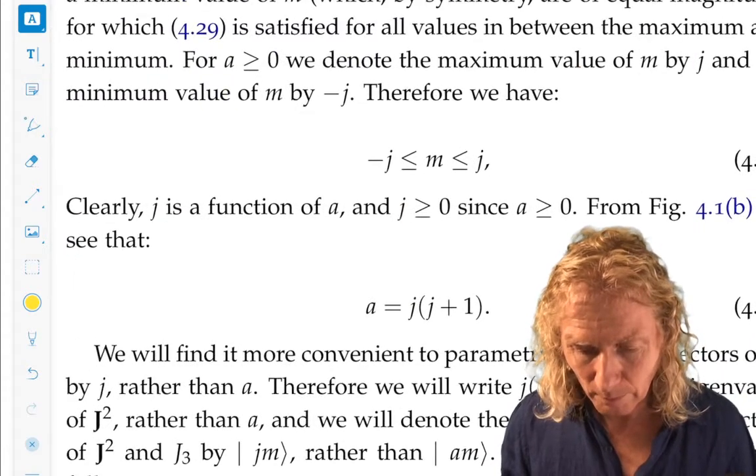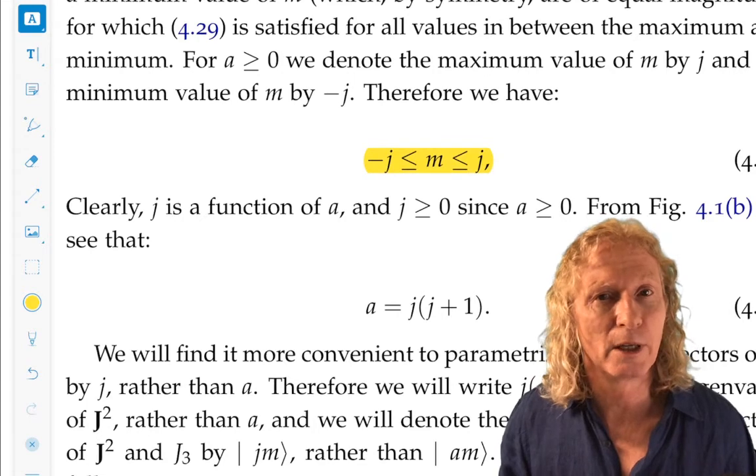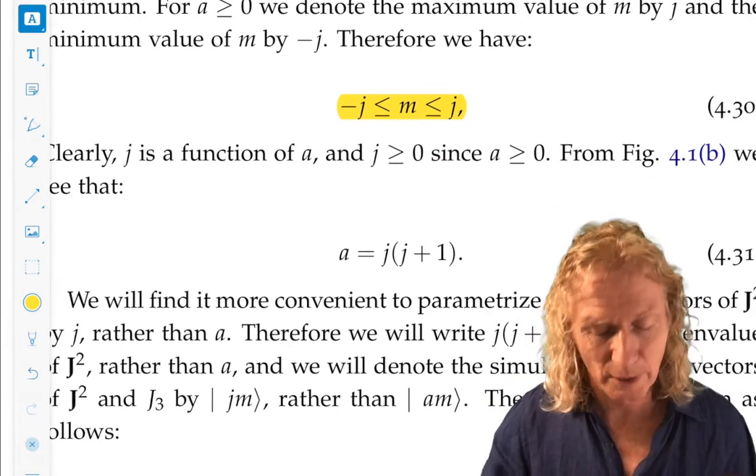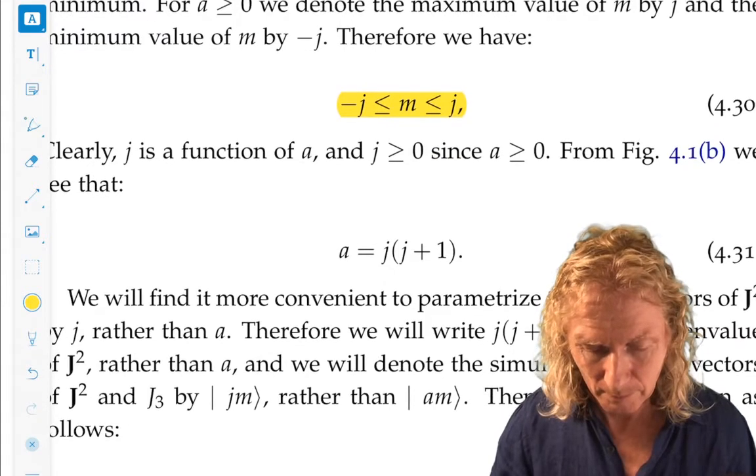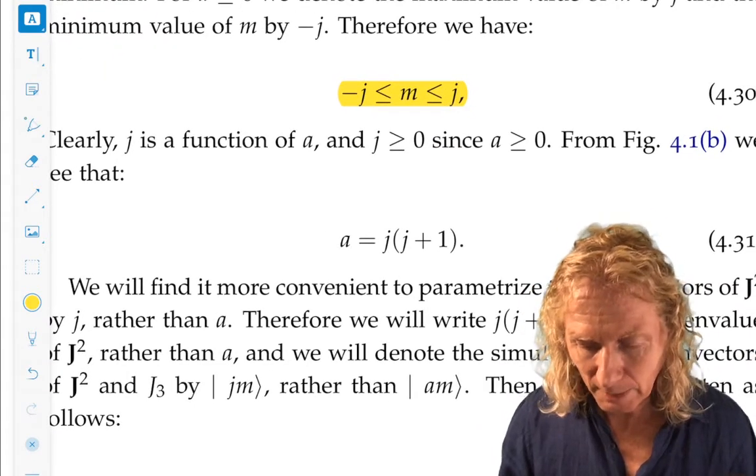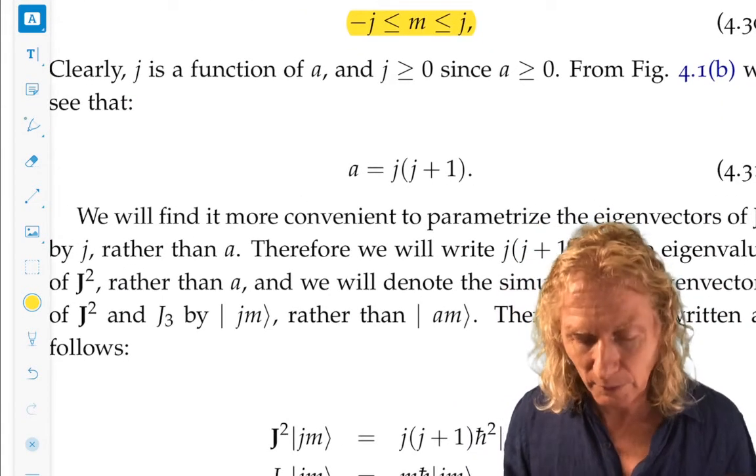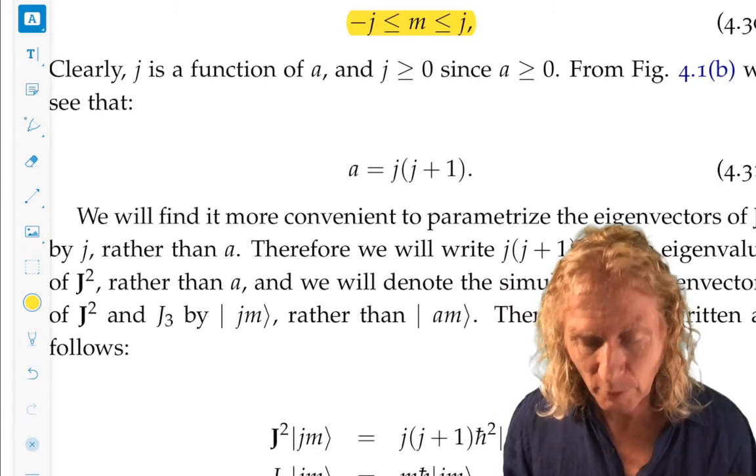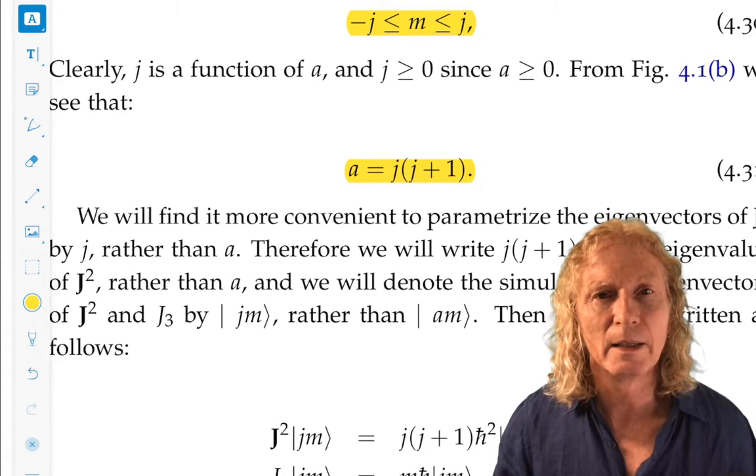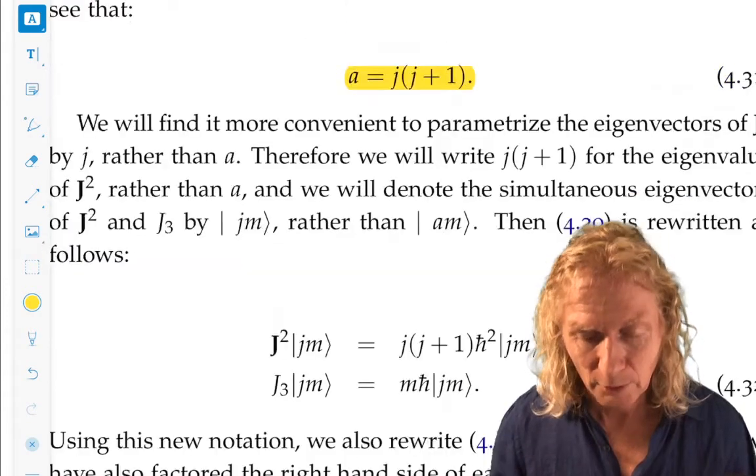This graph is important to understand how it relates to the corollary we just derived. So m lies between minus j and plus j. Why am I using j? That'll be clear in a few minutes. And j is a function of a, and if you go back and look at the figure, and the expressions, it's not hard from the corollary, expressions from the corollary, it's not hard to see that a is j times j plus 1.